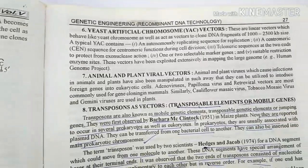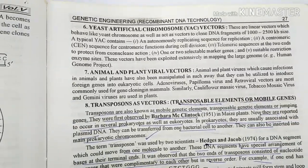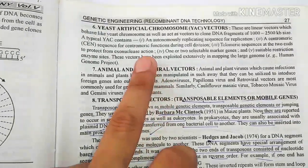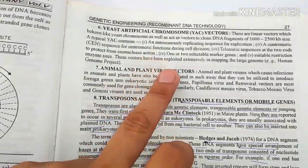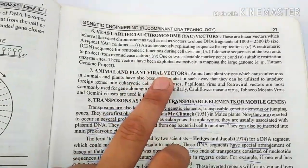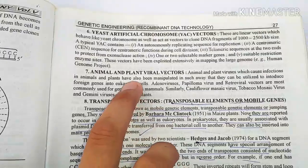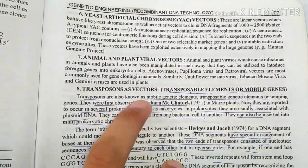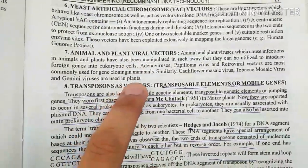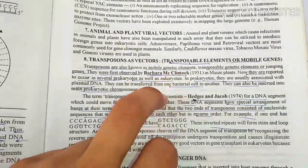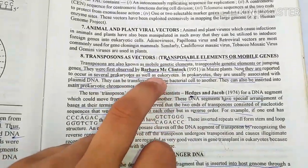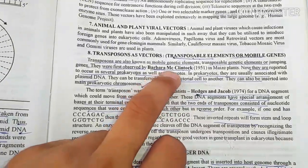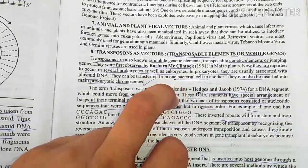Other vectors include yeast vectors and animal and plant viral vectors. Transposons are also used as vectors and are found in maize.